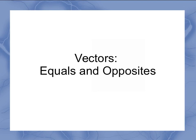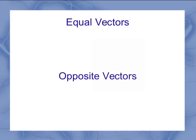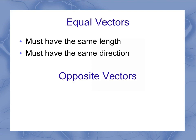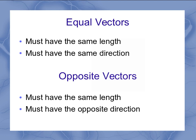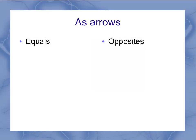Now let's talk about vectors that are equal and vectors that are opposite. If two vectors are equal to each other, they have to have the same length and the same direction. Opposite vectors also have the same length, but they have to have opposite directions to each other. If we represent our vectors as arrows, this is pretty easy to see.